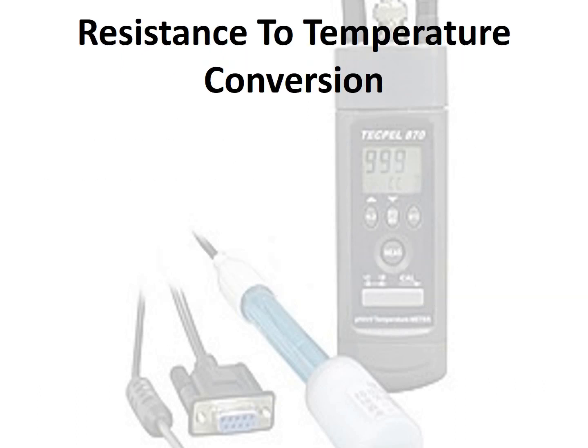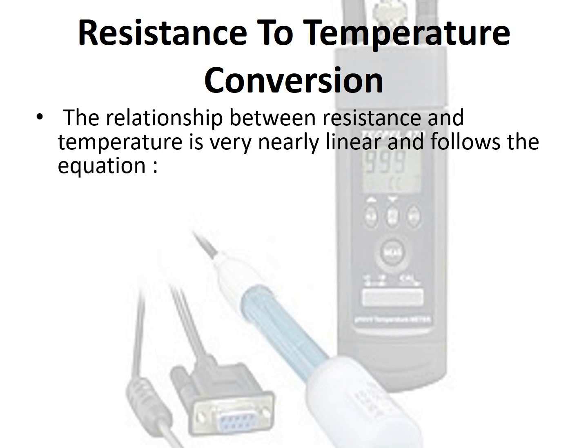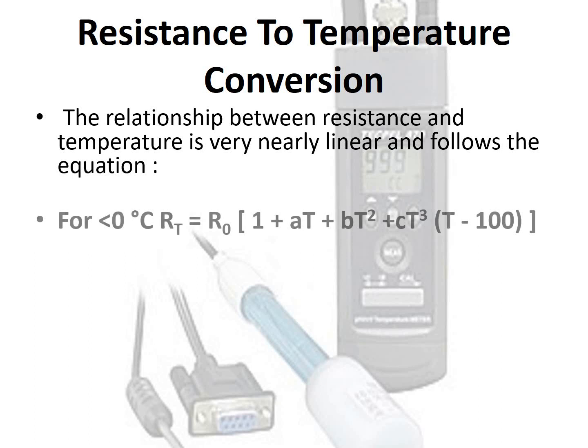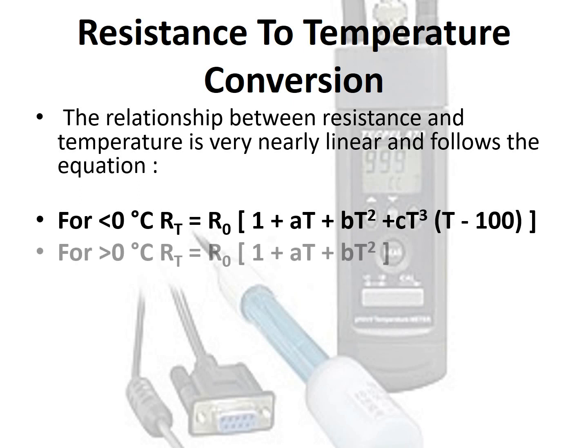The relationship between resistance and temperature is very nearly linear and follows the equation. For temperatures less than 0°C: RT = R0 × (1 + AT + BT² + CT³ × (T − 100)). For temperatures greater than 0°C: RT = R0 × (1 + AT + BT²).